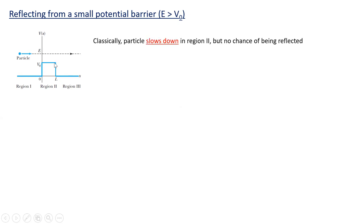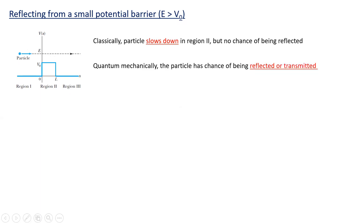Classically the particle would slow down since it loses kinetic energy here, but there's no chance of it being reflected — there would be no question of it turning around and coming back the other way. But it turns out quantum mechanically the particle has a chance of being either reflected or transmitted, even though it has more than enough energy to clear over this barrier.